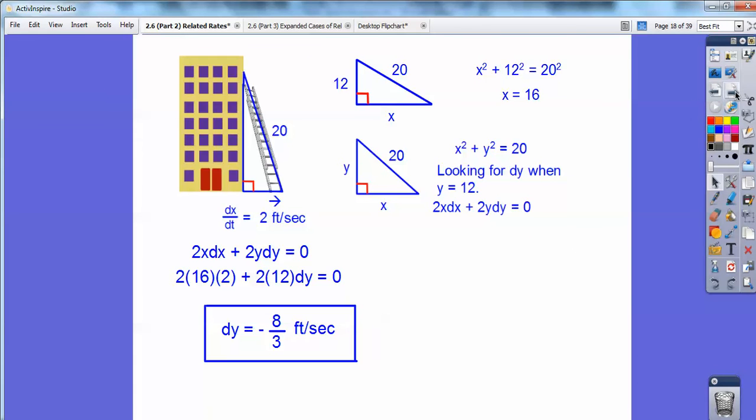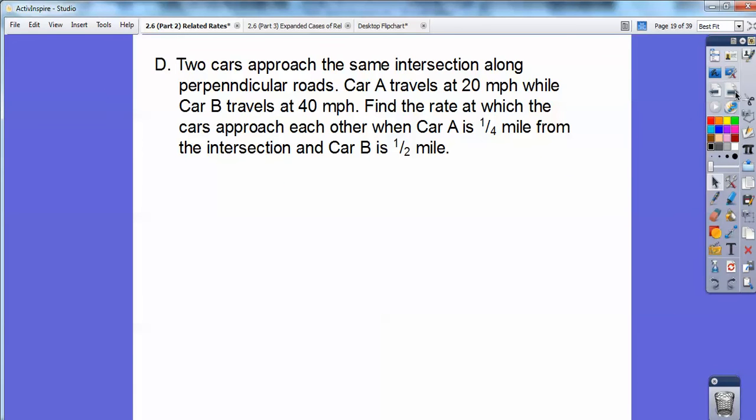So it's sinking down the wall negative 8 thirds or negative 2 and 2 thirds feet per second. Real easy, you guys. So here's another one. Two cars approach the same intersection along perpendicular roads.